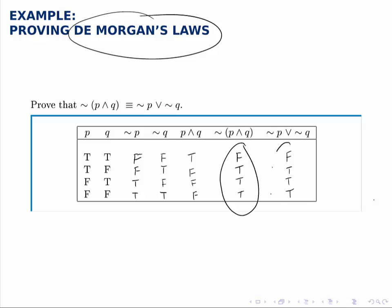And notice these last two columns are identical. So we've proven this law, one of De Morgan's laws, which is useful as we can apply it in later examples.